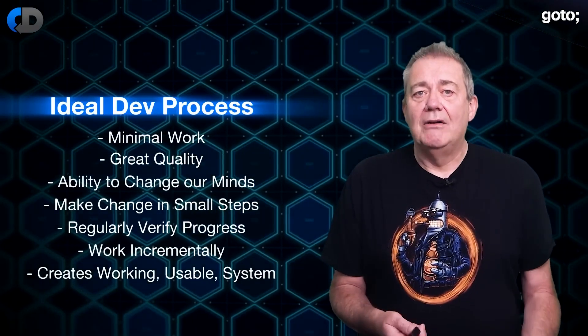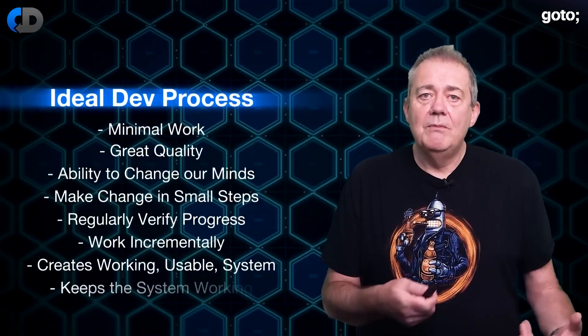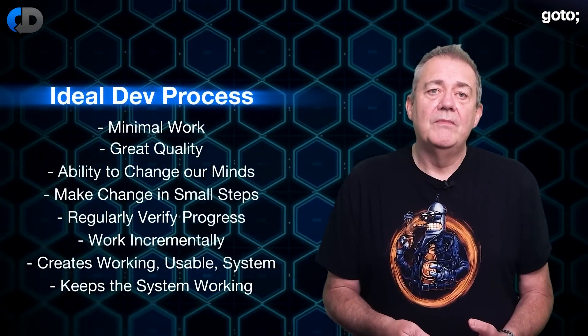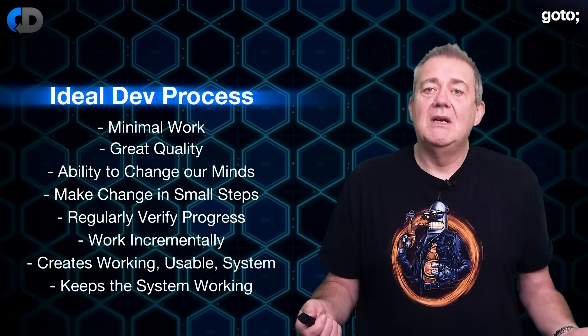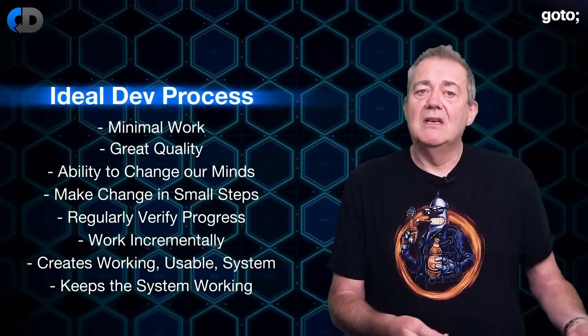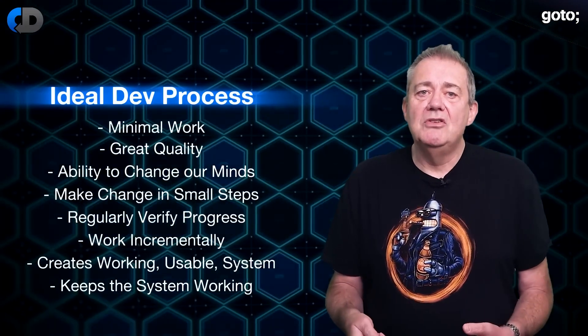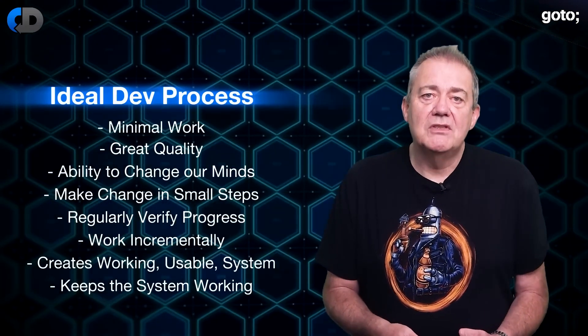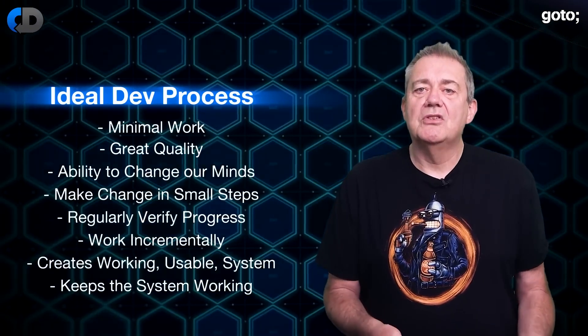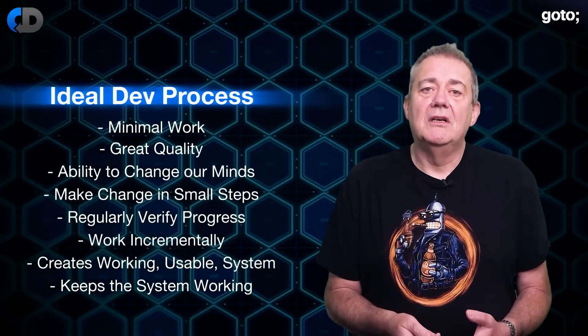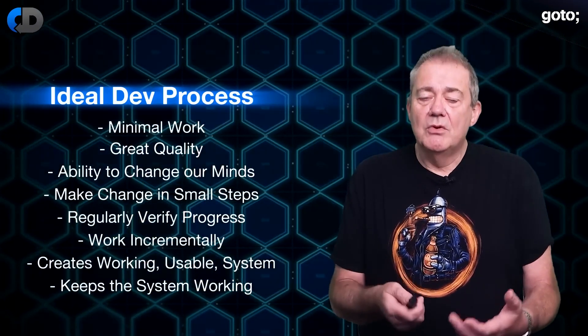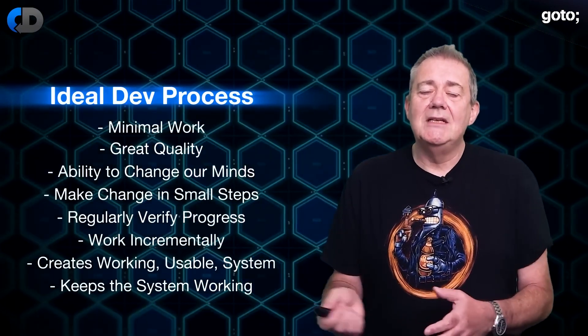The next ideal in our ideal model is that you keep the system working all the time. After all why would you want to do anything else? It's obviously better that it's working than not. This means that after every small change we could if we chose to release our changes into production ideally with no extra work. Remember we're talking about ideals here so suspend any disbelief.